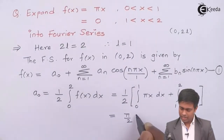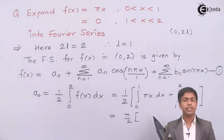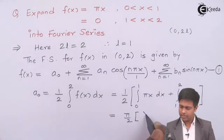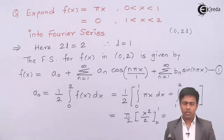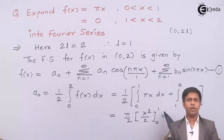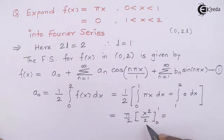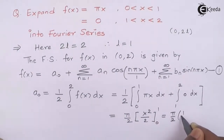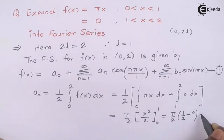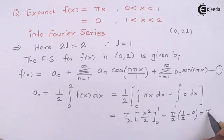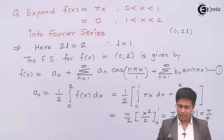The second term is 0, so we focus on the first term. Pi is a constant and can be taken outside, giving (pi/2) * integral of x dx. The integration of x is x²/2, evaluated from 0 to 1. Substituting the upper limit 1 gives 1/2, and the lower limit 0 gives 0. Therefore, a_0 = pi/4.